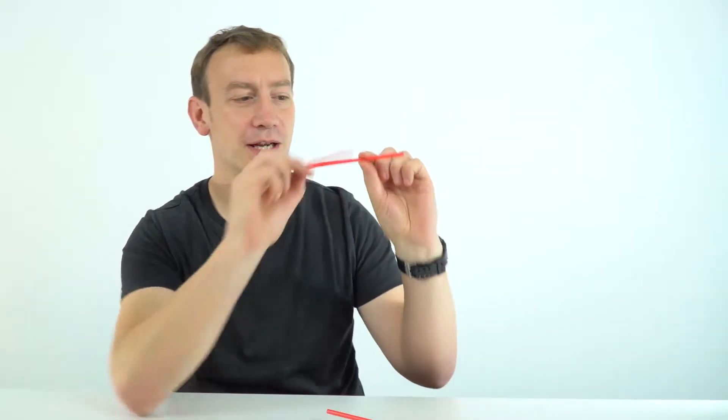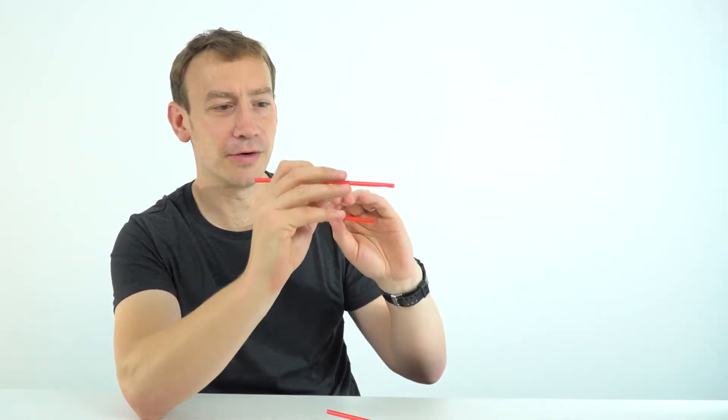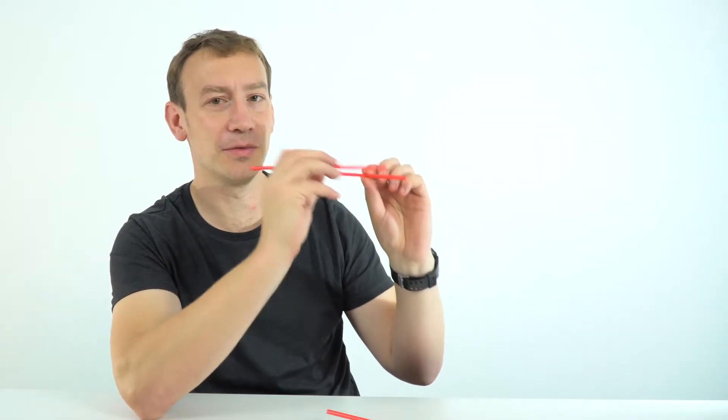But if you have straws which are connected in parallel, there's more ways for the electric current, or in this case the air, to flow, and that means the resistance decreases.